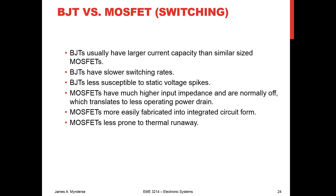BJTs typically have larger current capacity but are a little slower. CMOS devices are sensitive to static but less prone to thermal runaway, and MOSFETs are more easily fabricated, which is why you see a lot of them these days. In fact, a lot of things listed as TTL are actually CMOS on the inside these days. We're going to use transistors in class for actuator interfacing and for logic, though the logic will mostly be internal to things we're already doing. Next up, we'll talk about op-amps.